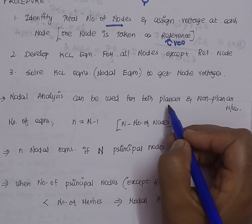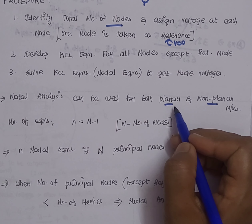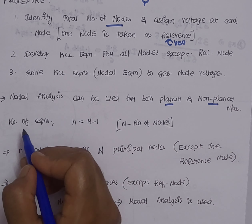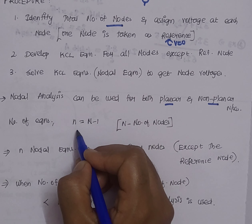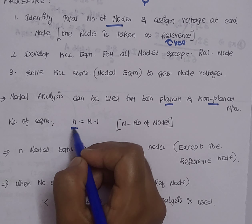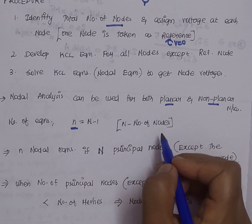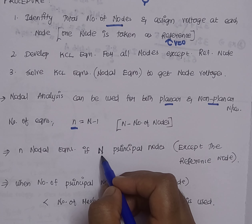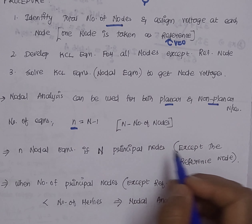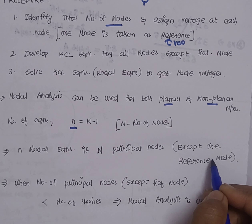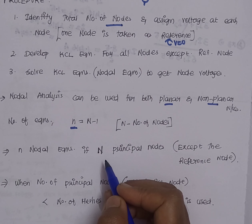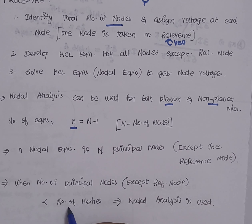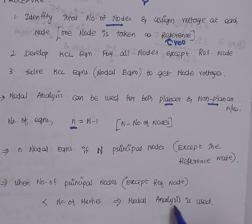Nodal analysis can be used for both planar and non-planar networks, whereas mesh analysis cannot be applied to both. The number of nodal equations is n = N − 1, where small n represents the number of equations and capital N represents the number of principal nodes. Nodal analysis is preferred whenever the number of principal nodes minus the reference is less than the number of meshes.